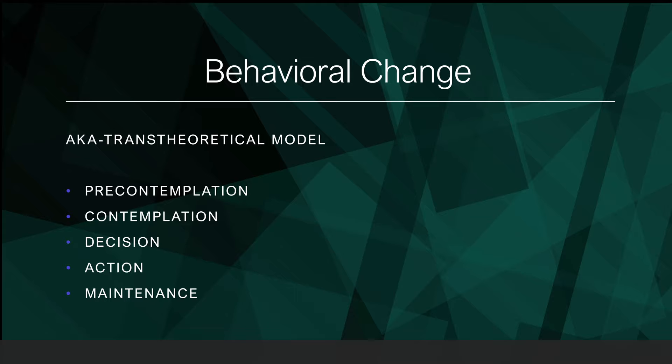Stage three is decision, where people decide to adopt the recommended behavior. Stage four is action, where people try to adopt the recommended behavior for a short period of time. Stage five is maintenance, in which people continue to perform the recommended health behavior for a long period of time — considered to be at least six months or more — and ideally incorporate it into their routine and lifestyle.